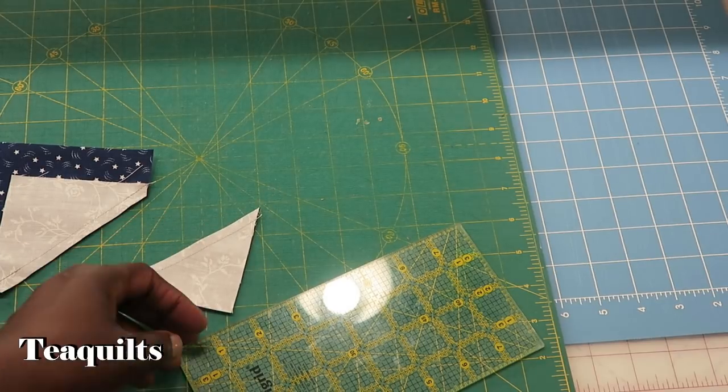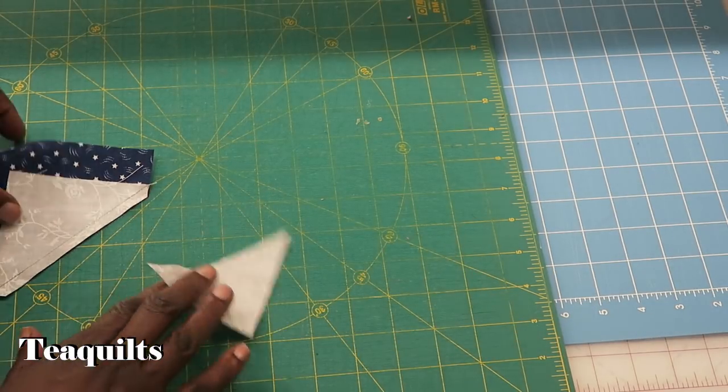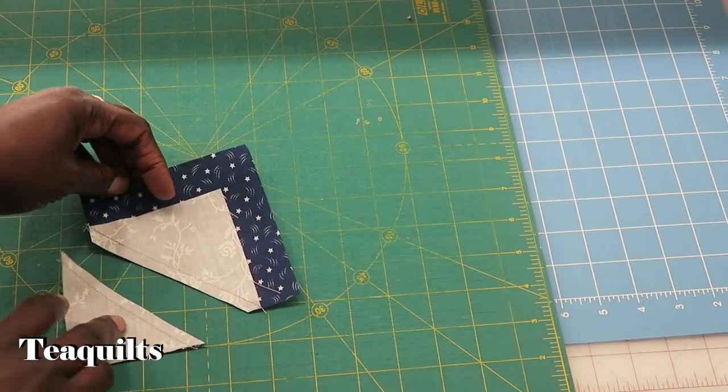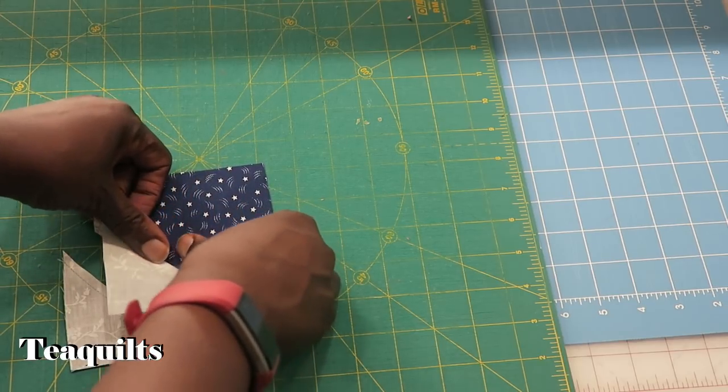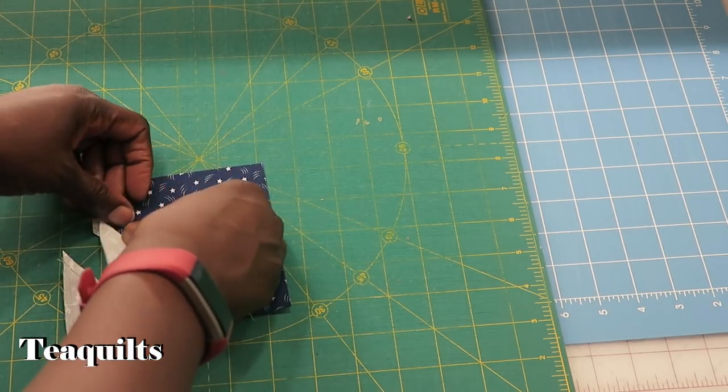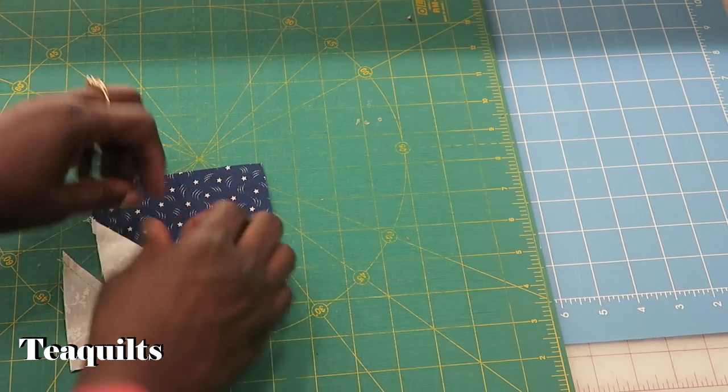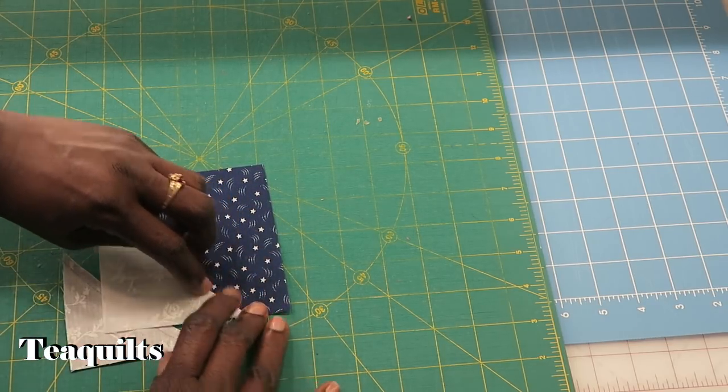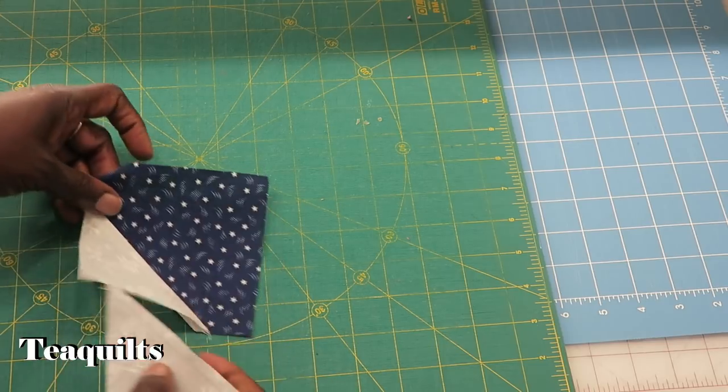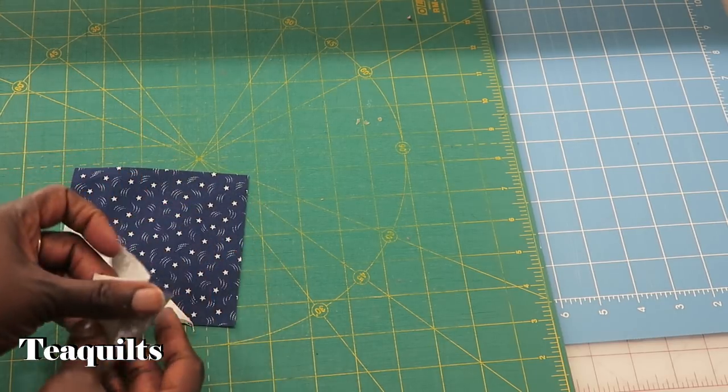So when you cut this apart, you actually now have two pieces, and we want to press this seam down. And then we have an extra half square triangle unit.